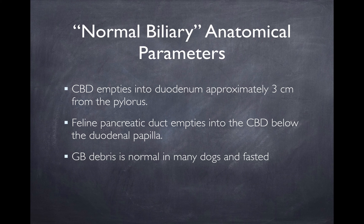We've been having some questions about the common bile duct, and this is an excerpt from one of my frequent lectures on the liver. Remember that the common bile duct empties into the duodenum approximately three centimeters from the pylorus. It's an important area to evaluate, especially in cases of upper GI disease, vomiting, and any bilirubin elevations. But you don't have to have bilirubin elevations to have common bile duct disease, especially in cats.